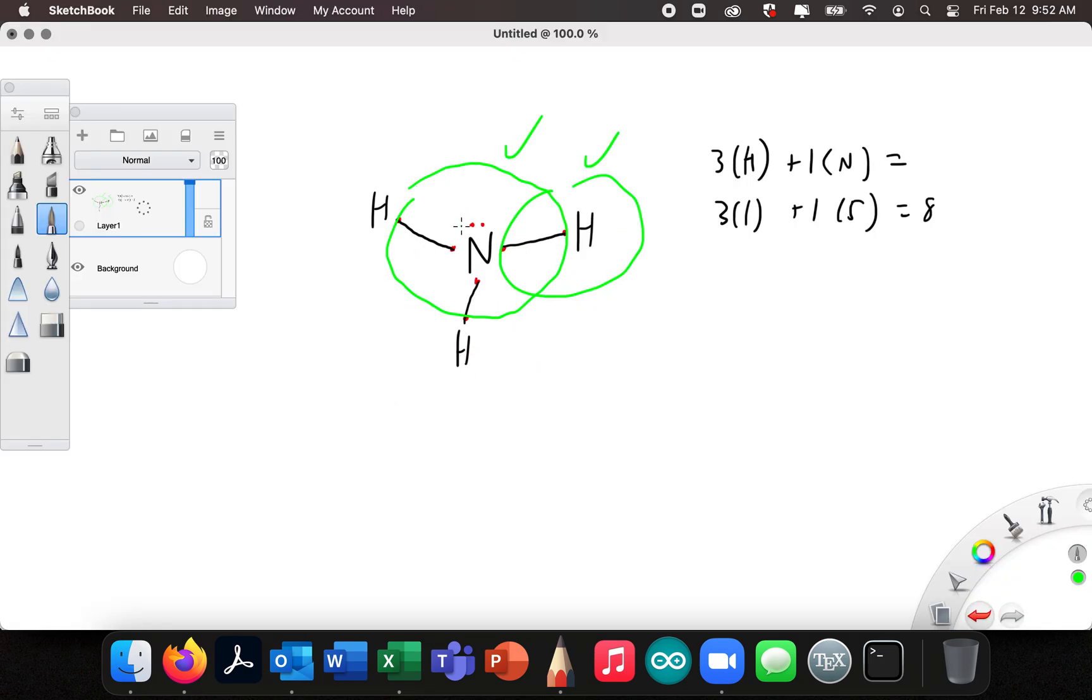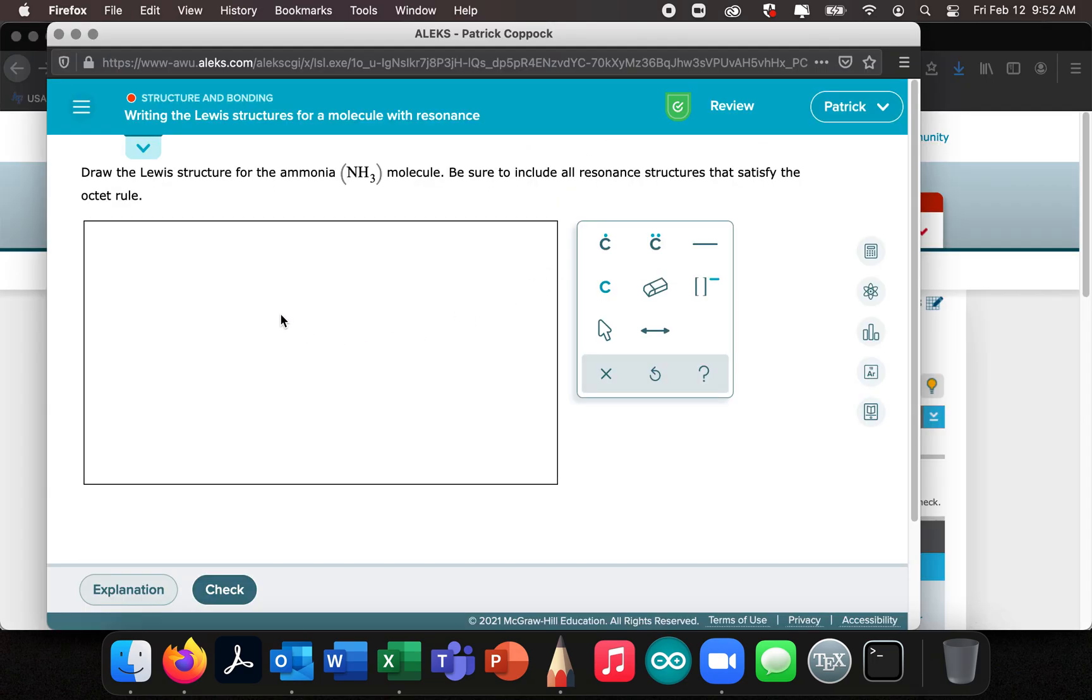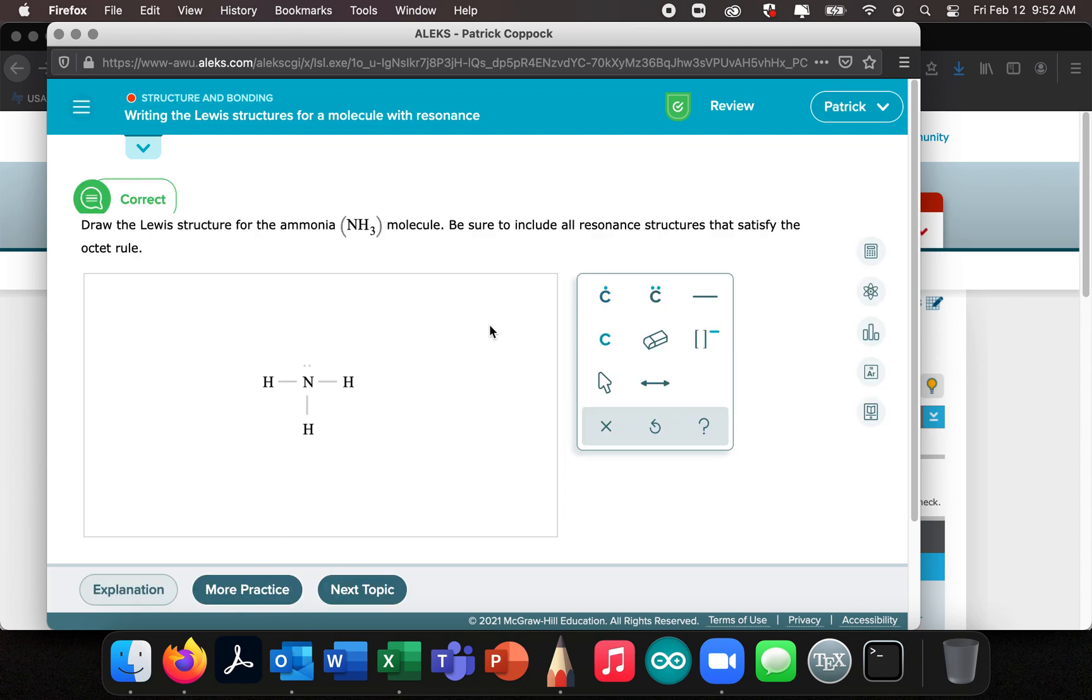Now, since there's no double bonds or triple bonds, there can be no resonance. Let me say that again. No double bonds, no triple bonds. There can be no resonance. So there's no other options. This is it. Nitrogen, hydrogen, hydrogen, and hydrogen. Check. Correct.